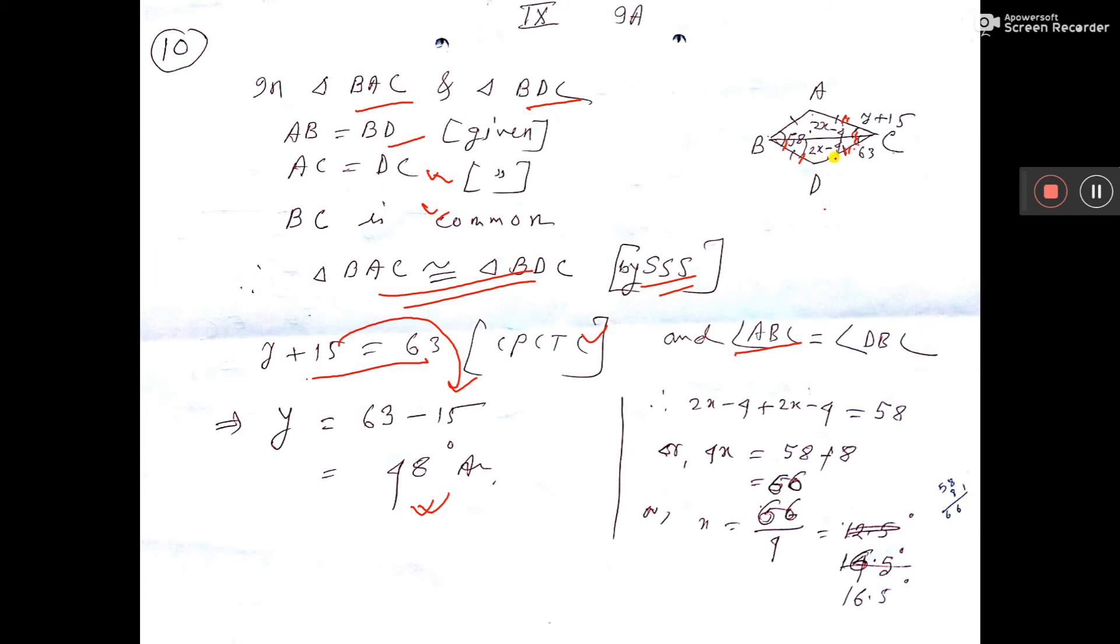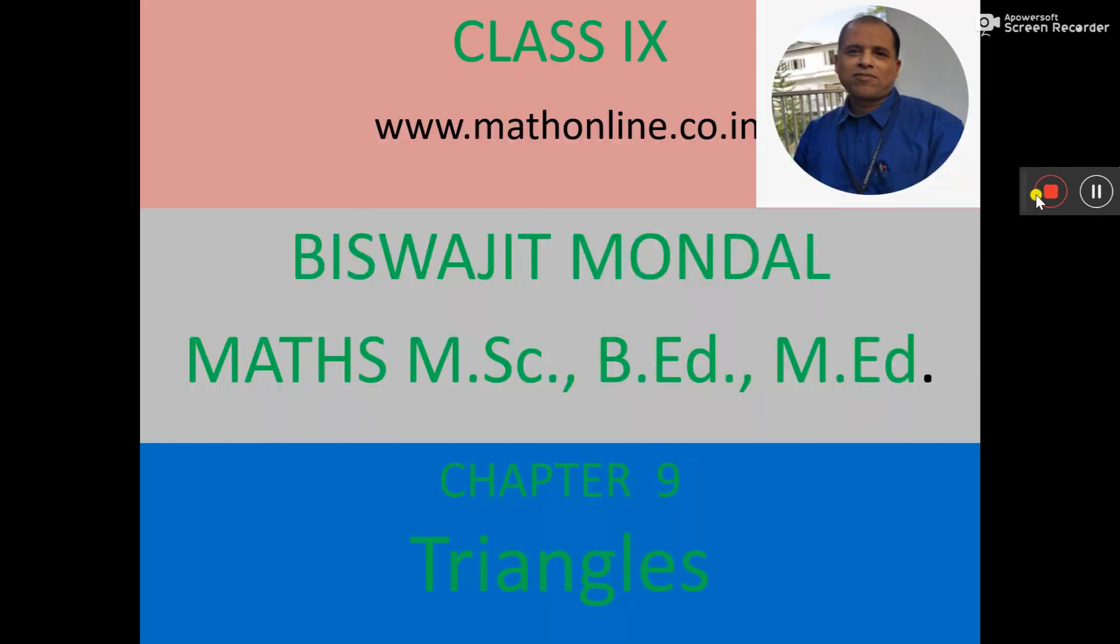One angle given 2x minus 4. So this is also 2x minus 4. So this 2x minus 4 plus 2x minus 4 is equal to 58 degree. That is only written here. Now from here you are getting the value of X. That is the answer of X and this is the answer of Y. So this sum is done. Thank you.